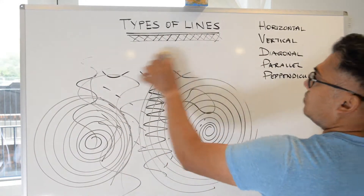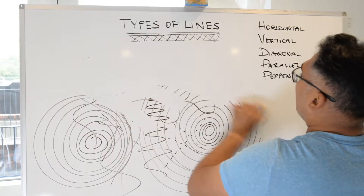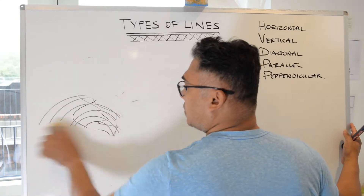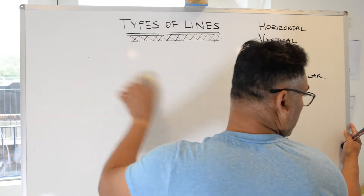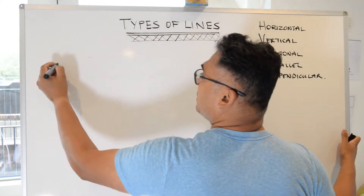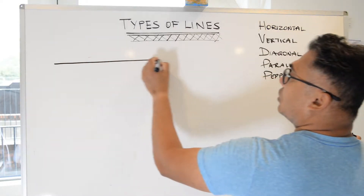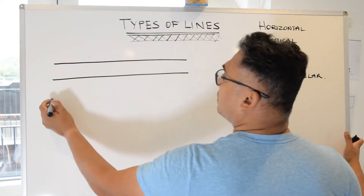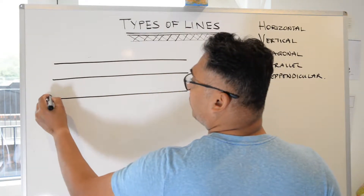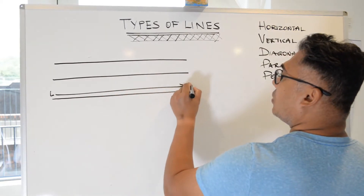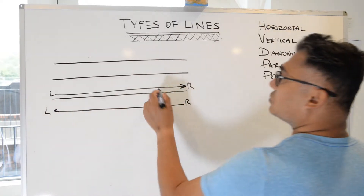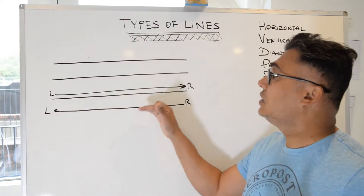We'll start off with the very simple horizontal line, the first one on our list. Horizontal lines basically run across the page from east to west. These are horizontal lines — they move either from left to right or from right to left. So that's really simple: east to west, left to right — horizontal.